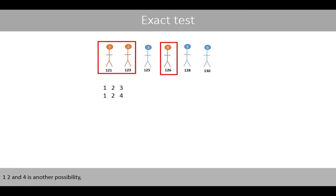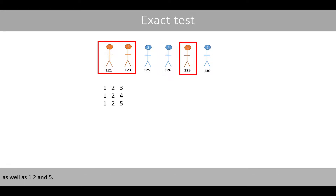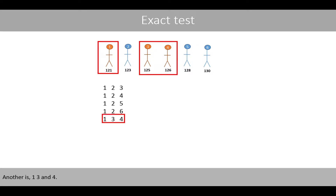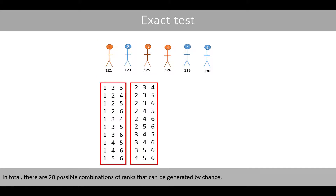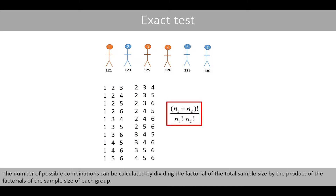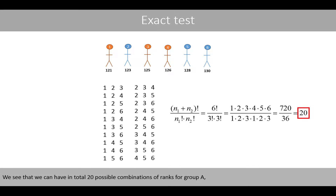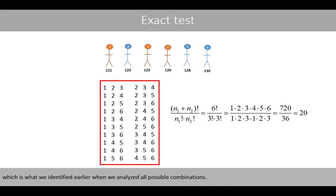The ranks 1, 2, and 4 is another possibility, as well as 1, 2, and 5. Another is 1, 3, and 4. In total, there are 20 possible combinations of ranks that can be generated by chance. The number of possible combinations can be calculated by dividing the factorial of the total sample size by the product of the factorials of the sample size of each group. We can confirm that there are 20 possible combinations of ranks for group A, consistent with all the combinations we identified.